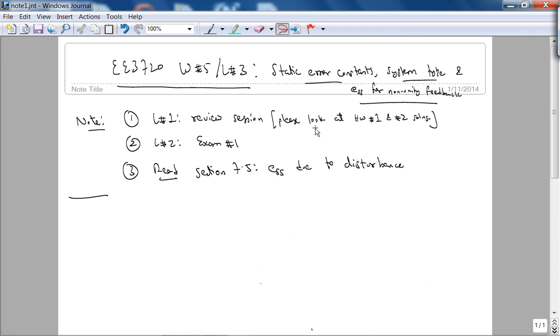Some notes: Lecture 1 this week was the review session, so please look at the homework 2 solutions I posted online and homework 1 solutions in preparation for exam 1. Exam 1 covered chapters 5 and 6 - reduction of multiple subsystems and stability using the Routh-Hurwitz criterion. Also note, please read section 7.5, steady state error due to disturbance inputs. It's not that difficult, but let's quickly finish this.